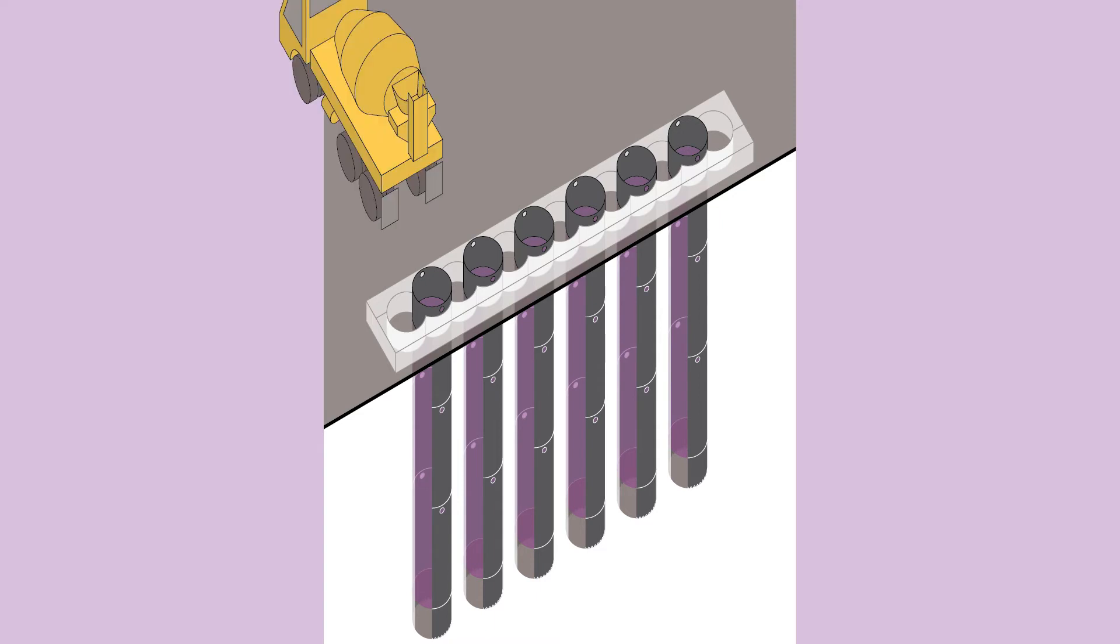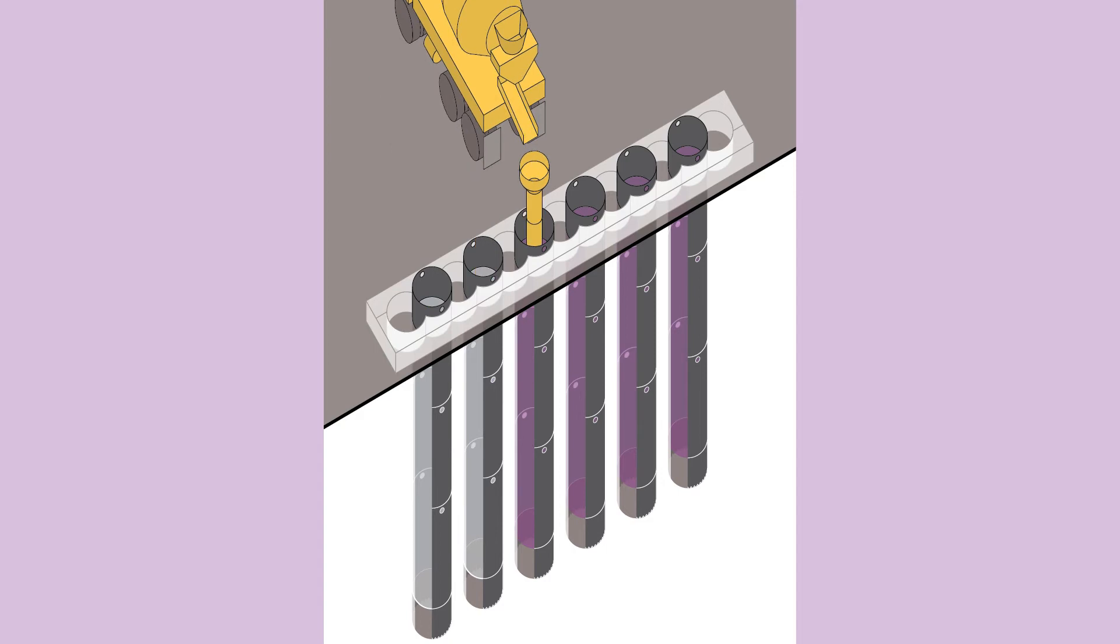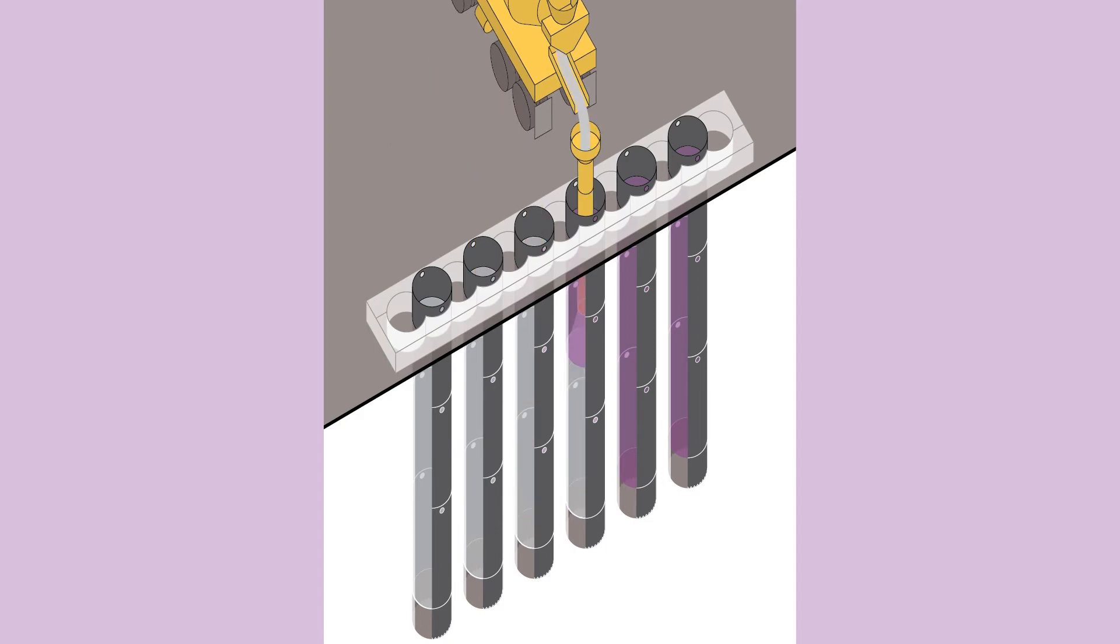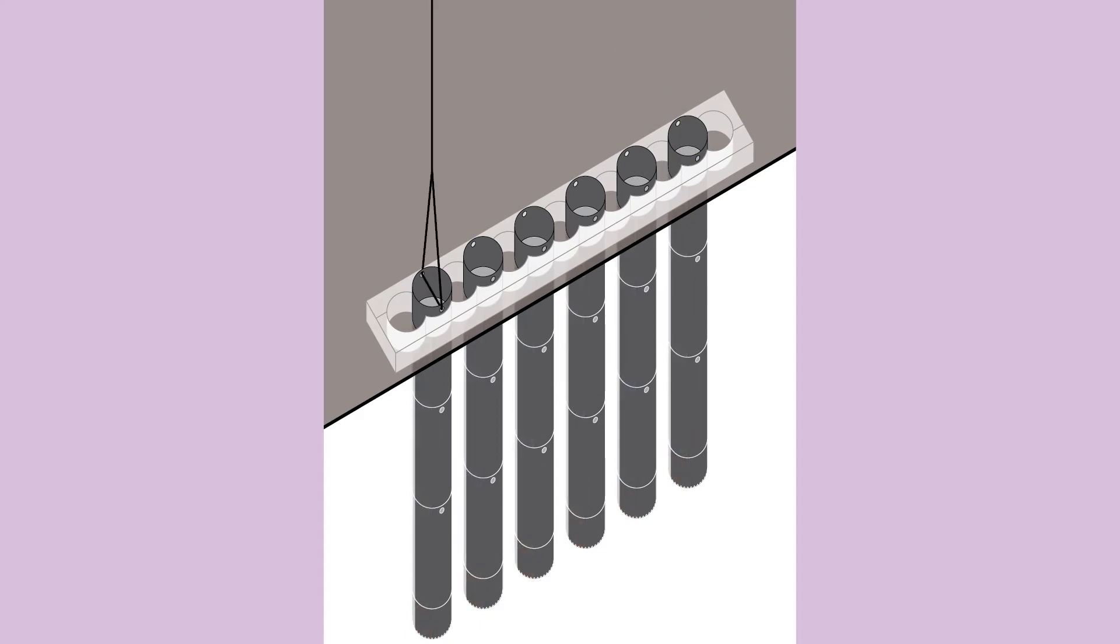After the desanding process is complete, concrete is pumped into each pile from the bottom up. Once the concrete has finished being poured and is ready to be set, the steel casings are removed from the primary piles.